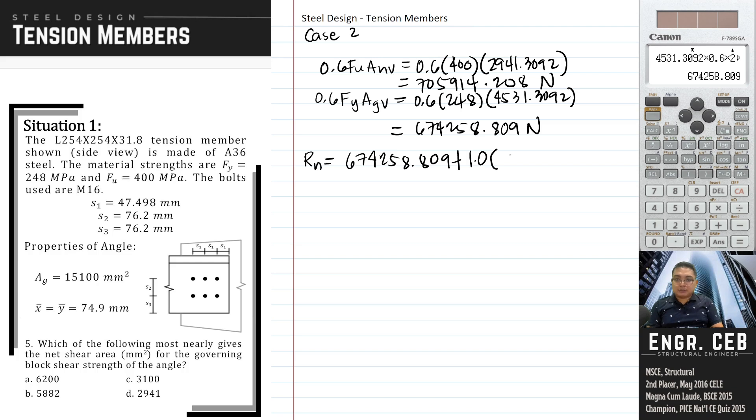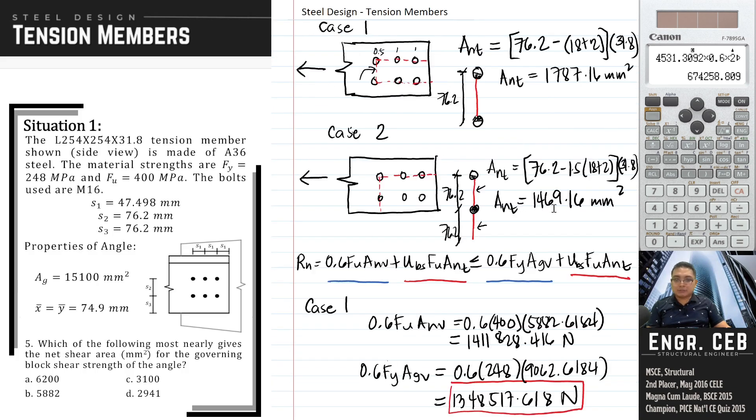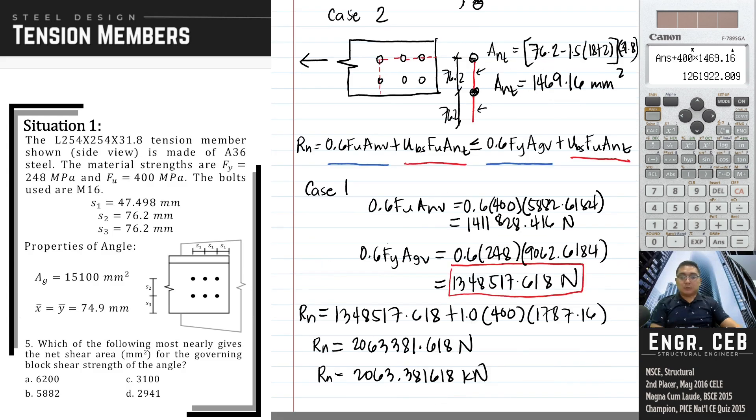1.0 times 400. Let us look at the A sub NT of case 2. A sub NT of case 2 is 1469.16. We have an incorrect term for A sub NT of case 2. As you can see, we have 276.2 for ANT of case 2.